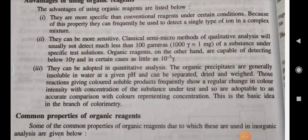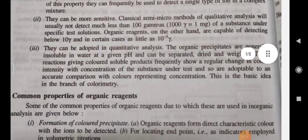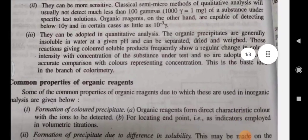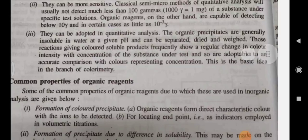Advantages of using organic reagents: They are more specific than conventional reagents under certain conditions. Because of this property, they can frequently be used to detect a single type of ion in a complex mixture. They can also be more sensitive. Classical semi-micro methods of qualitative analysis will usually not detect much less than 100 gammas of a substance under a specific test solution.